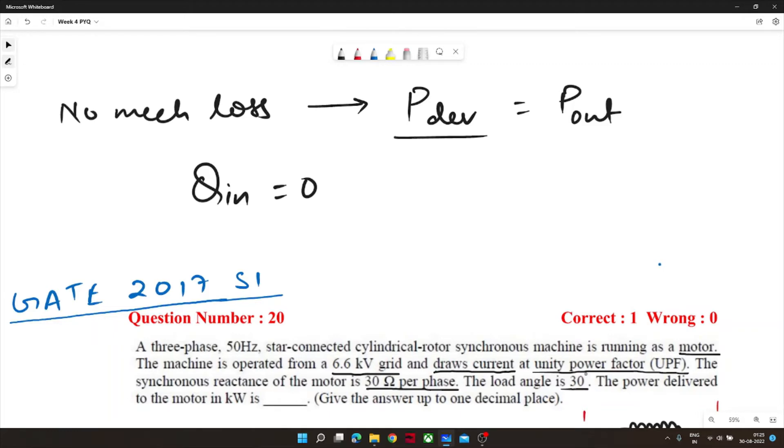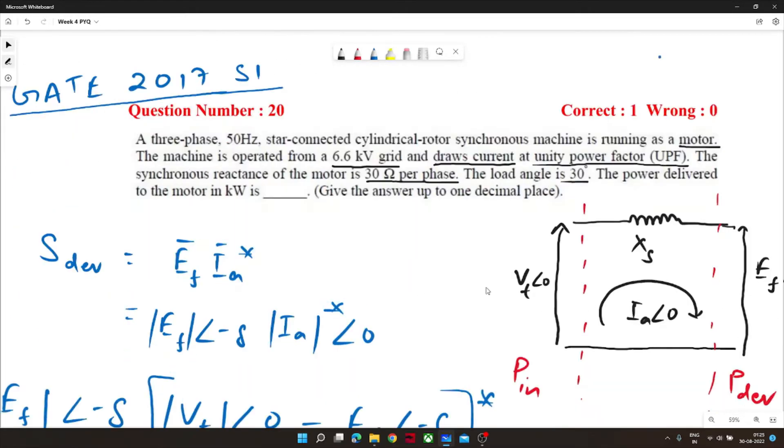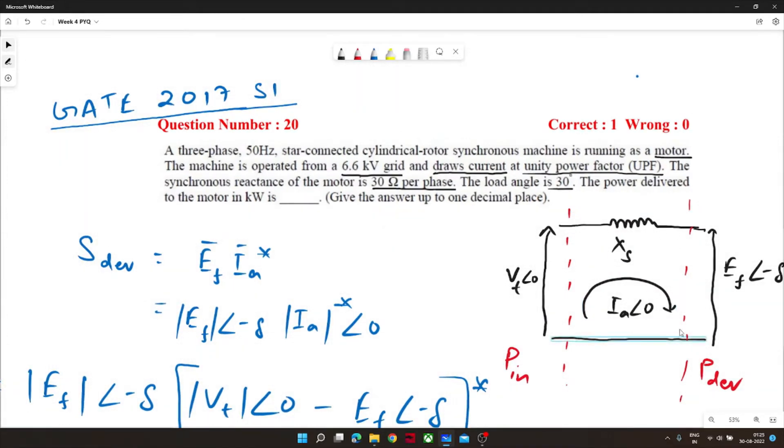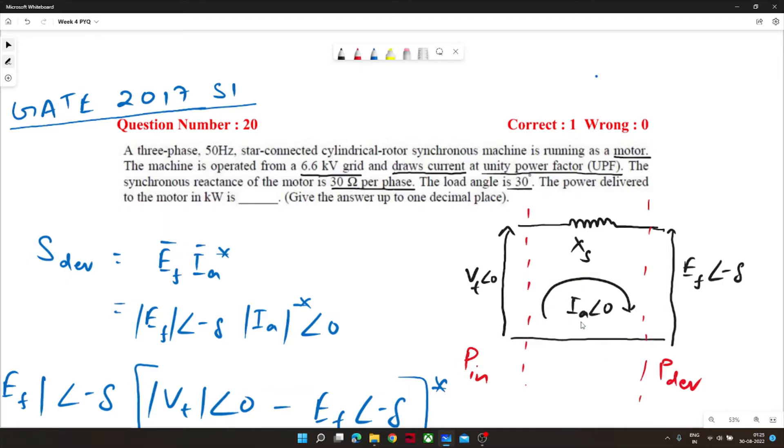So we have to indirectly calculate the power developed in the motor. Now from this circuit we can infer that in motor V_t at the input side and E_f at the developed power. For developed power we know S_dev apparent developed power is equal to E_f I_a conjugate. Now E_f is mod of E_f angle minus delta because it is motor.